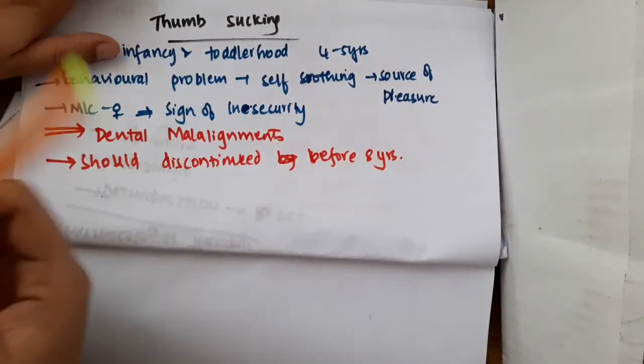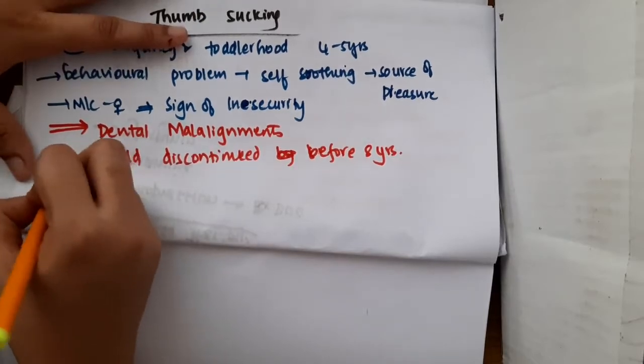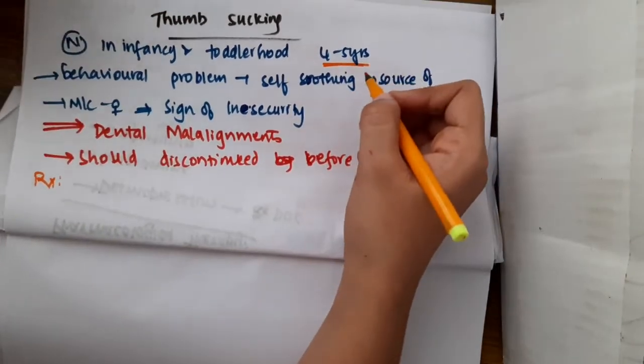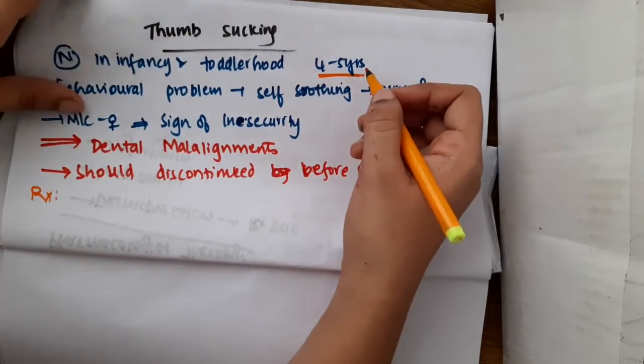How do you treat it? Treatment of thumb sucking is not required for 4 to 5 years of age because it is normal till that age.